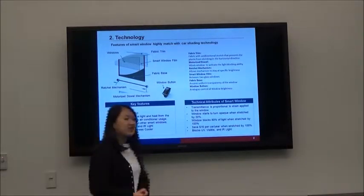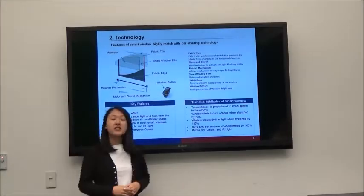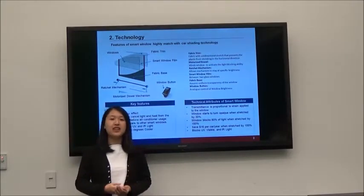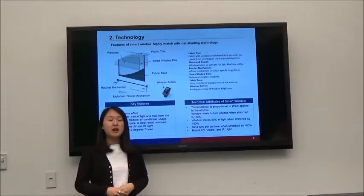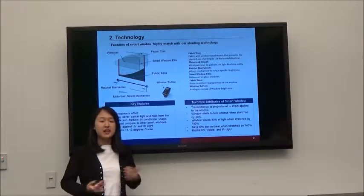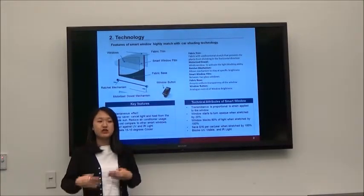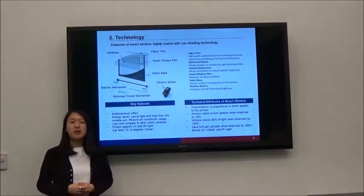I can now introduce you the technical facts about our product. Our window is able to block not only visible light but also UV and IR. The sunlight transmittance is proportional to the strain applied to the window. The window starts to turn opaque when being stretched by 20% and can block 80% sunlight when being stretched by 100%. There are three key features about our product.